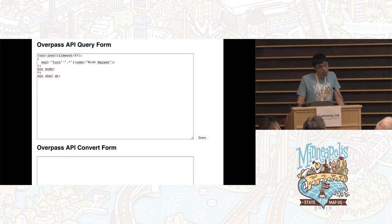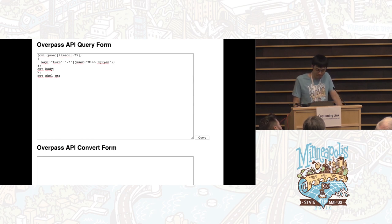Every database has a way to query it, and OSM is no exception. It has the Overpass API — it's like a search engine for metadata.